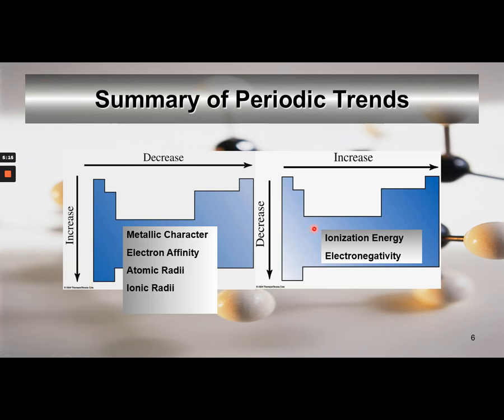If you just say ionization energy and electronegativity increase across a period and decrease down the group, the others are just the opposite. So the only two you really have to know their trends for are ionization energy and electronegativity—increase across a period, decrease down the group—and the others are just the opposite.